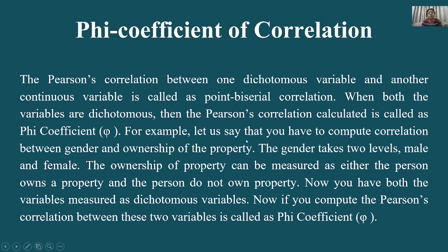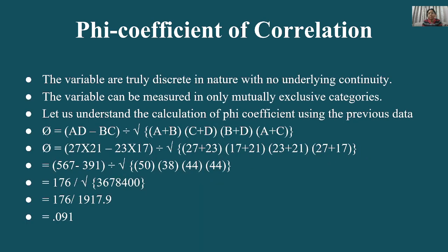For example, correlation between gender and ownership of property — gender dichotomous होगा क्योंकि दो categories हैं: male/female। Ownership of property भी दो categories में बँट जाएगा: किसके पास है और किसके पास नहीं। दोनों variables dichotomous होंगे तो phi coefficient लगाएंगे — क्योंकि यह data normal distribution को follow नहीं करता। अगर normal distribution follow करता तो tetrachoric लगाते।